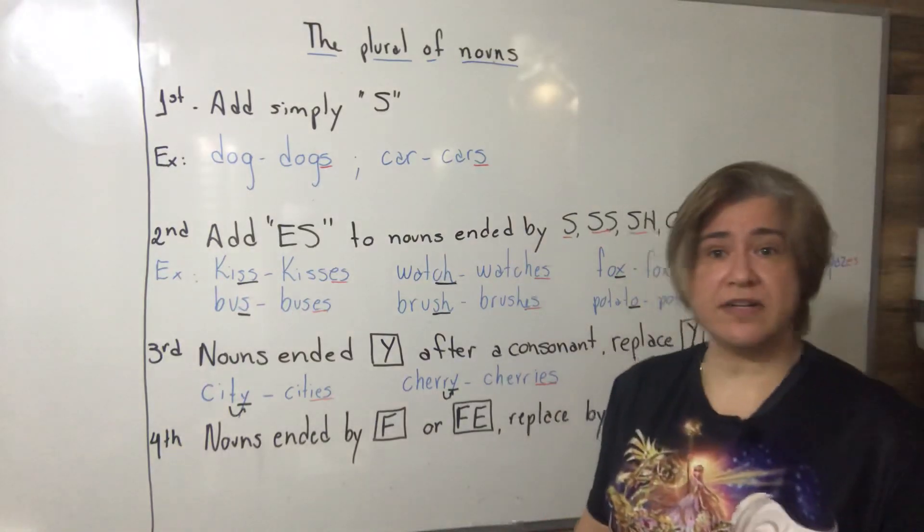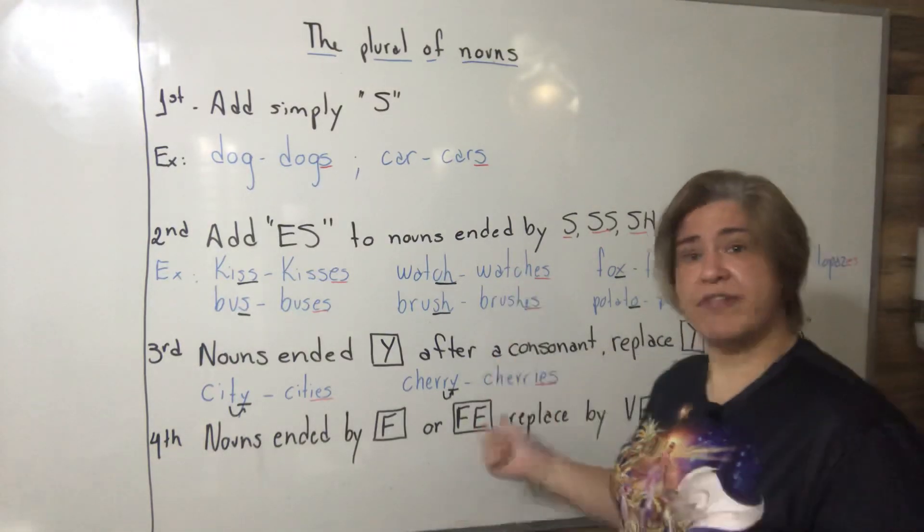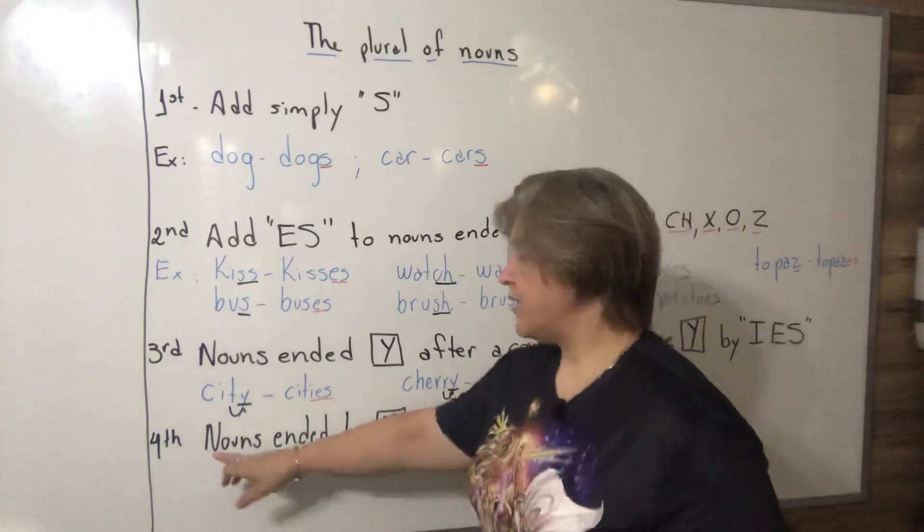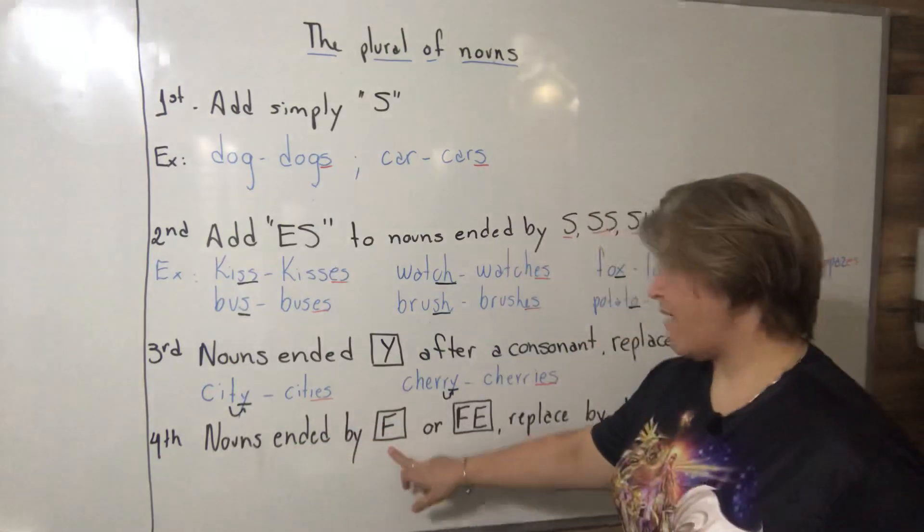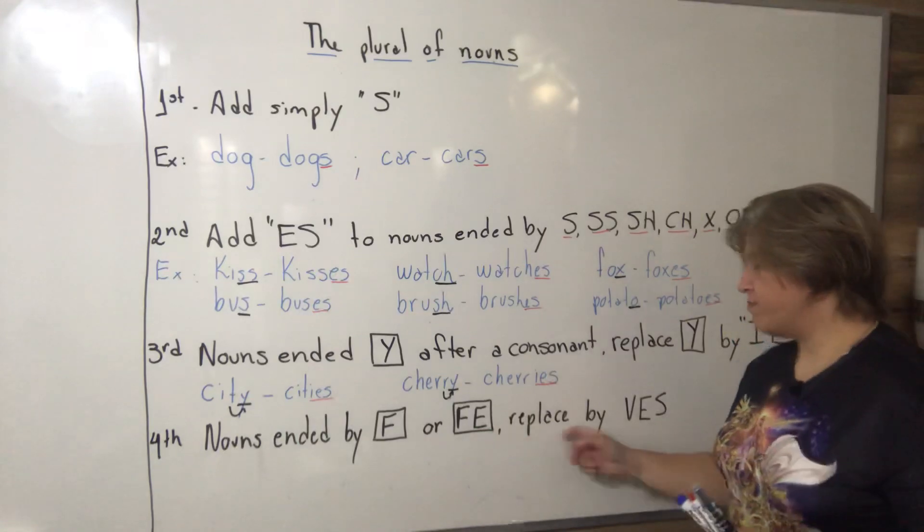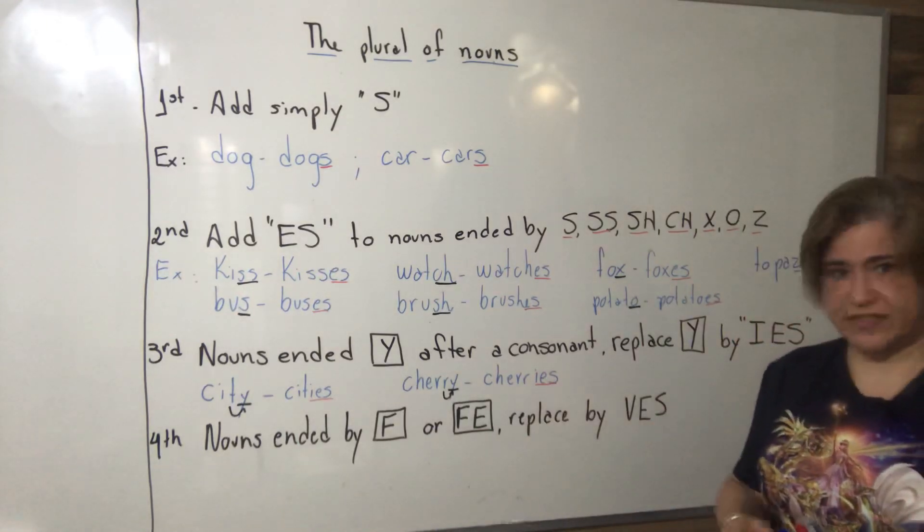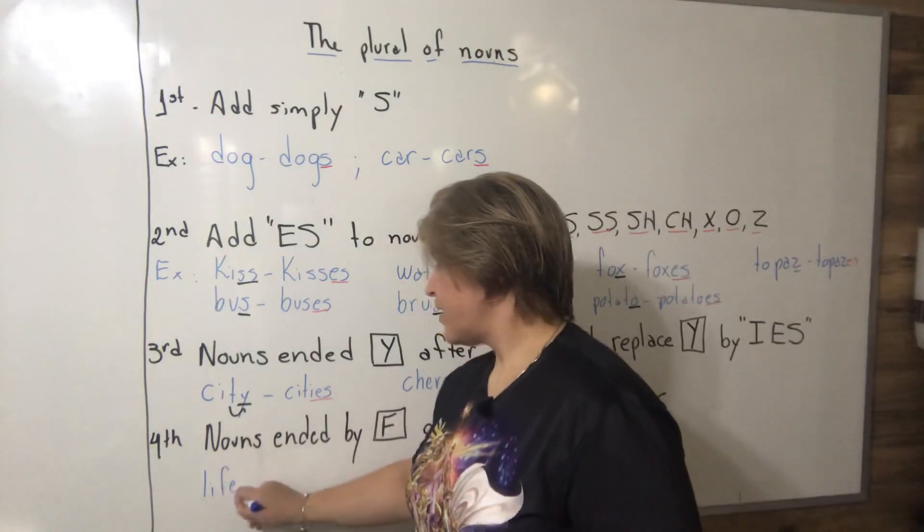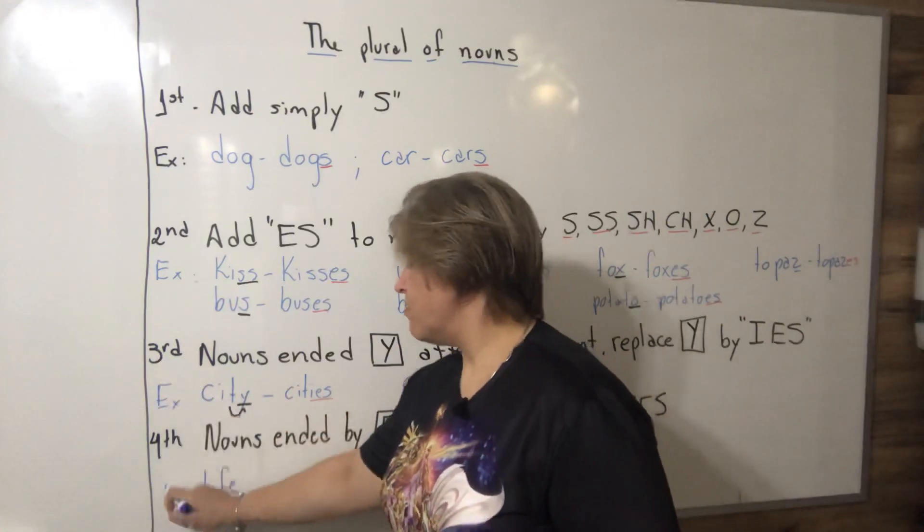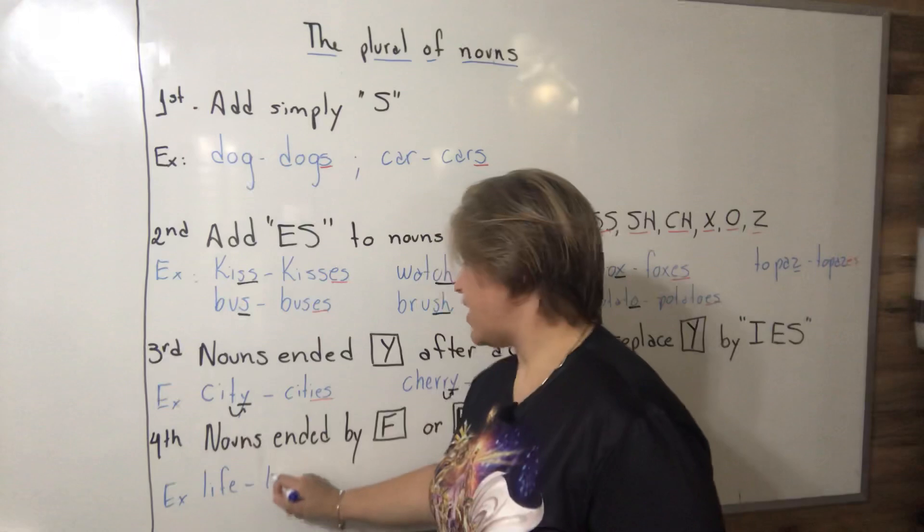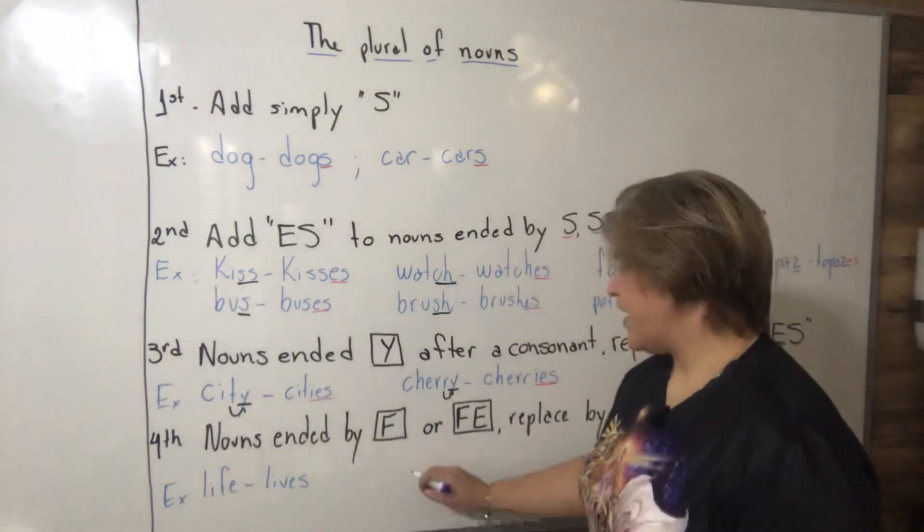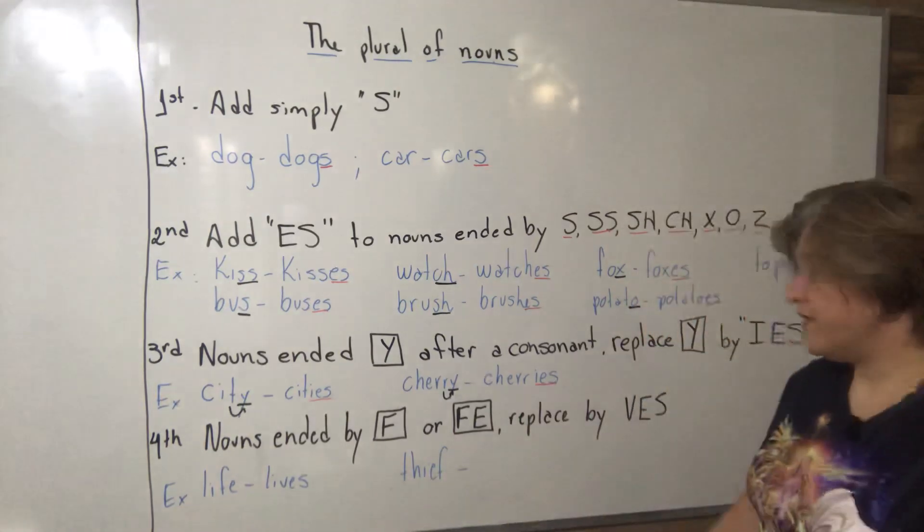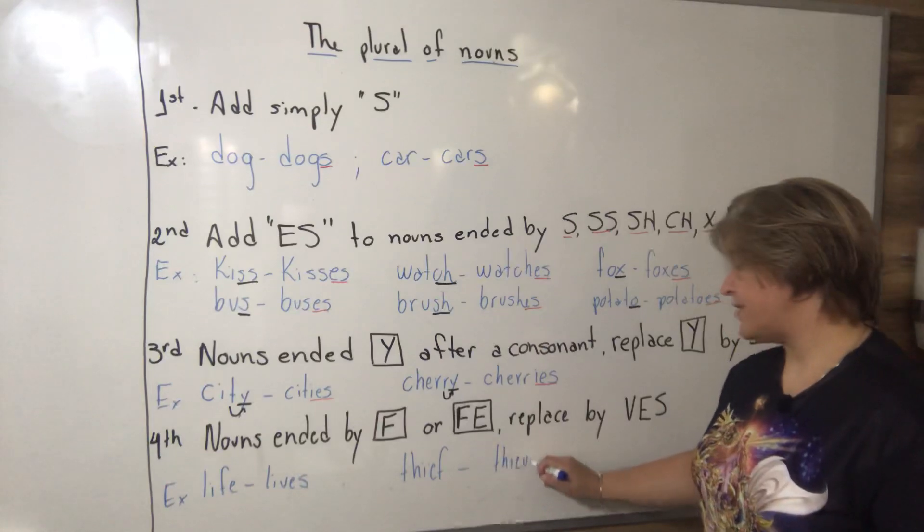Number four: nouns ended by F or FE, replace by VES. Example - we have life, the plural of life is lives. We have thief, the plural of thief is thieves.